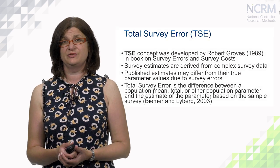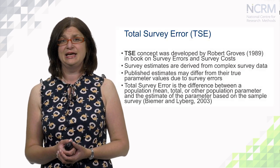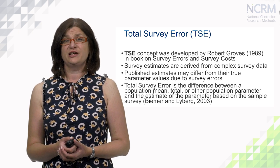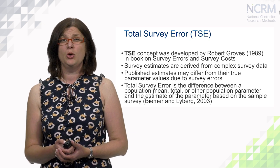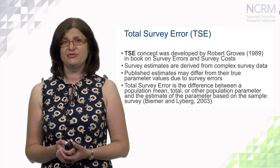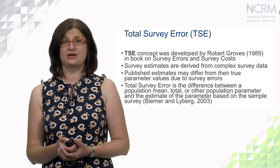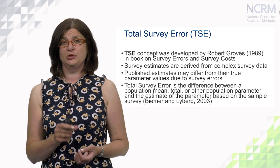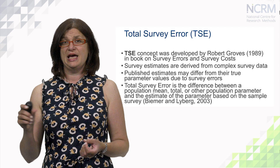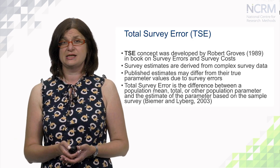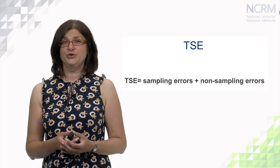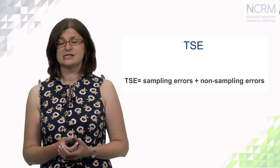Now I would like to introduce a very important concept of data accuracy: total survey error. Total survey error is a concept developed by Robert Groves in 1989 in his book on survey errors and survey costs. Survey estimates are derived from complex survey data; however, published estimates may differ from their parameter values due to different survey errors. Total survey error is the difference between the population mean or other population parameters and the estimate of the parameter based on the sample survey. The total survey error contains sampling errors and non-sampling errors.